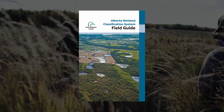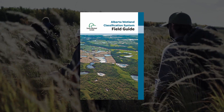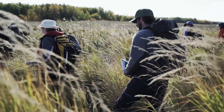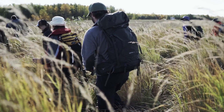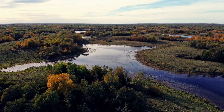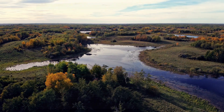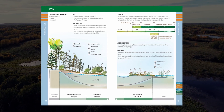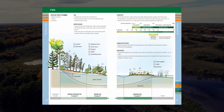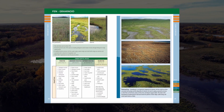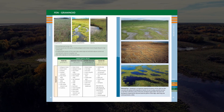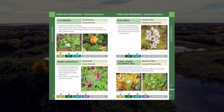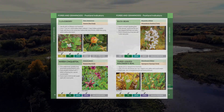The field guide can be used by anyone to identify and classify wetlands in Alberta, helping support wetland conservation efforts across the province. There are 24 detailed fact sheets covering each wetland class, form and type in the guide. Embedded within the fact sheets are over 250 images and illustrations of wetlands, soil, water chemistry and common plant species.